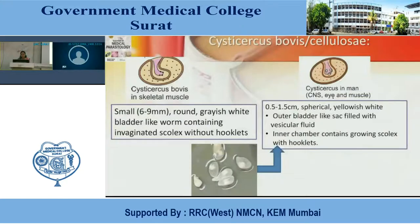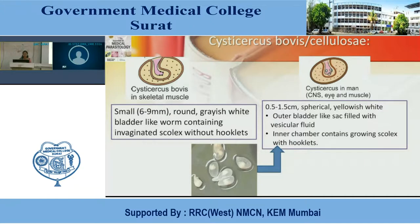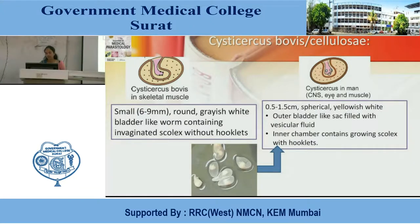Cysticercus bovis and Cysticercus cellulosae — two types. Cysticercus bovis in skeletal muscle: it is 6–9 mm, round, greyish-white, bladder-like worm containing an invaginated scolex without hooklets. Cysticercus cellulosae in CNS, eye, and muscles: it is 0.5–1.5 cm, spherical in shape, yellowish-white, outer bladder-like sac filled with vesicular fluid; inner chamber contains growing scolex with hooklets.